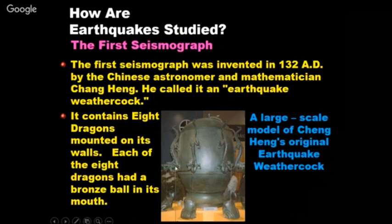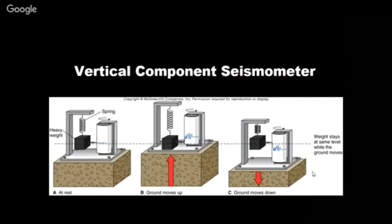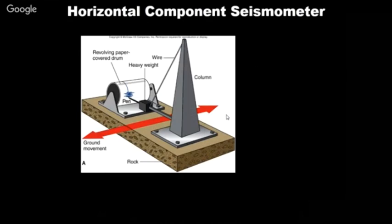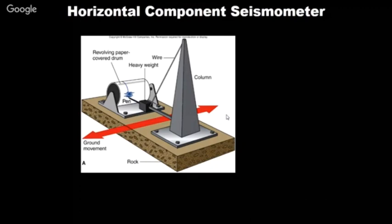The first seismograph was invented in 132 AD by Chinese astronomer Zhang Heng. It had eight dragons with brass balls, and frogs with open mouths below — when seismic activity occurred, a ball fell into a frog's mouth producing sound. Today, digital seismometers and tri-axial accelerometers measure acceleration in X, Y, and Z directions with great sensitivity.